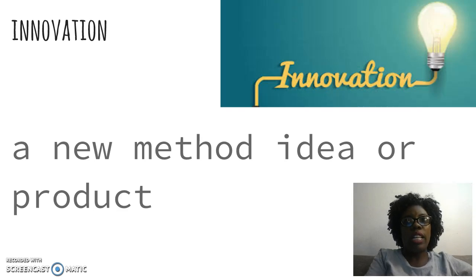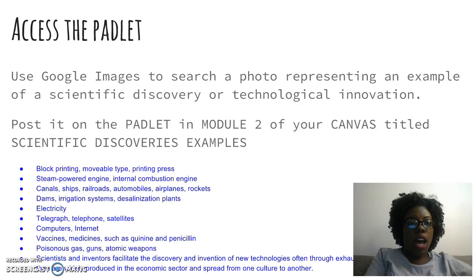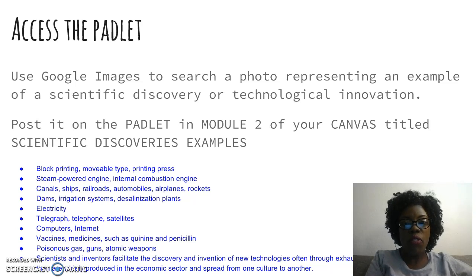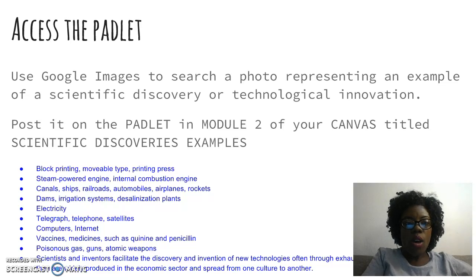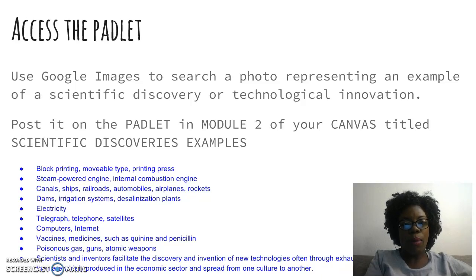You're going to be exploring different innovations that have happened over history. I want you to do this by using Google Images to search for a photo representing an example of a scientific discovery or technological innovation. When you find one, post it on the Padlet located in Module 2 of your Canvas titled Scientific Discoveries Examples.